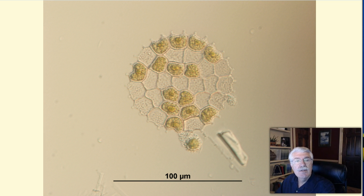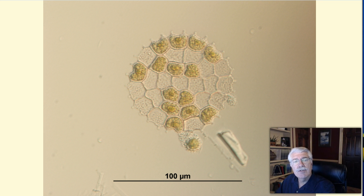This takes place in the Earth's oceans, lakes, and in other bodies of water. Phytoplankton account for about half of all photosynthesis that occurs on Earth.